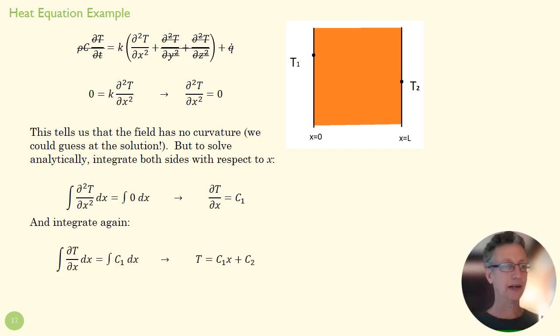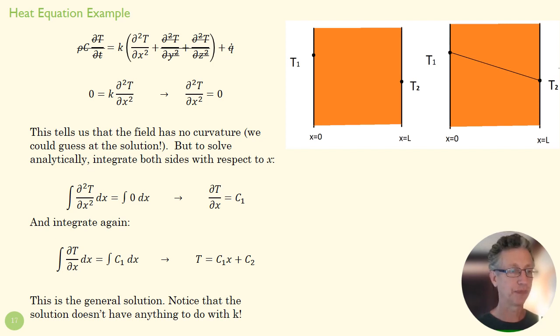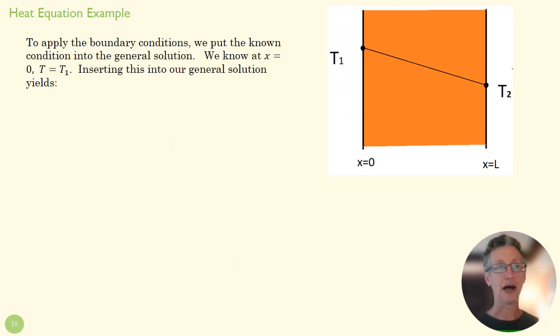We're going to integrate that again. So we integrate this guy one more time, and we get a nice linear equation. So we could have guessed that because this tells us what's our curvature. It's no curvature. And so that must be linear. So that's going to tell us this is our general solution. So it looks something like that. We know we're going to have a linear solution to this problem. It doesn't have anything to do with K. The particular solution is going to have to do with our boundary conditions.